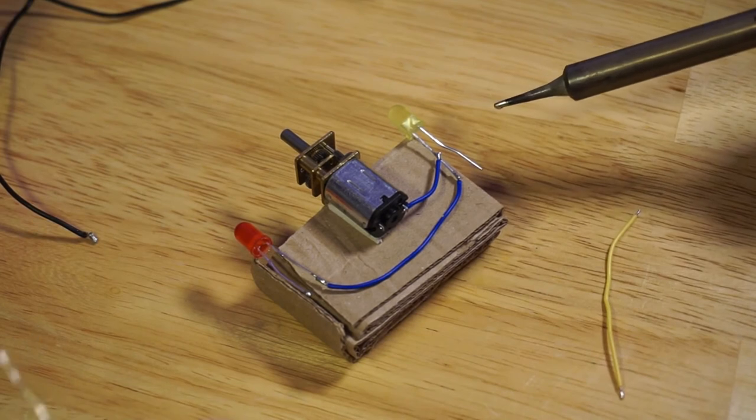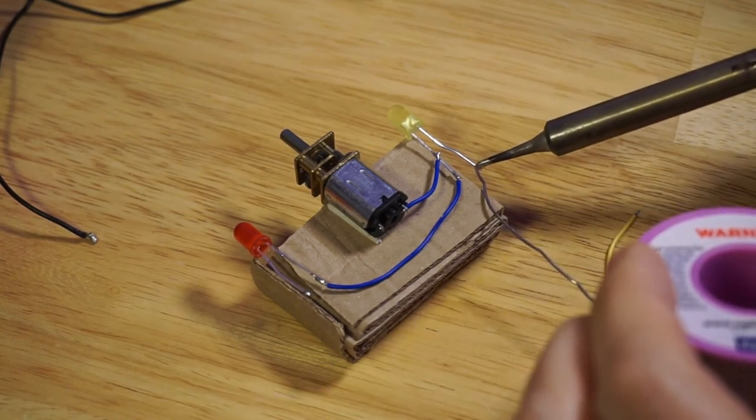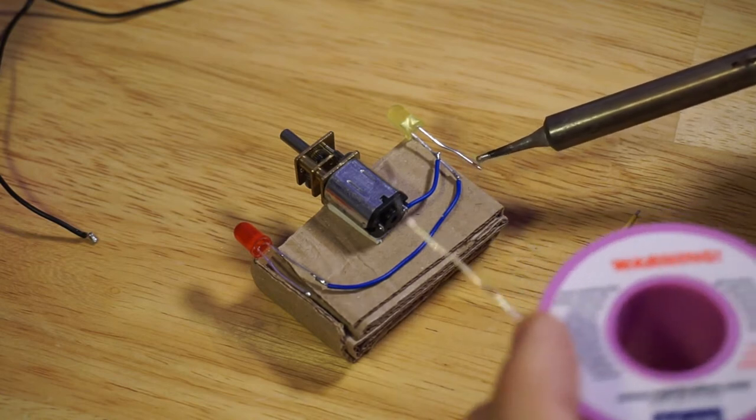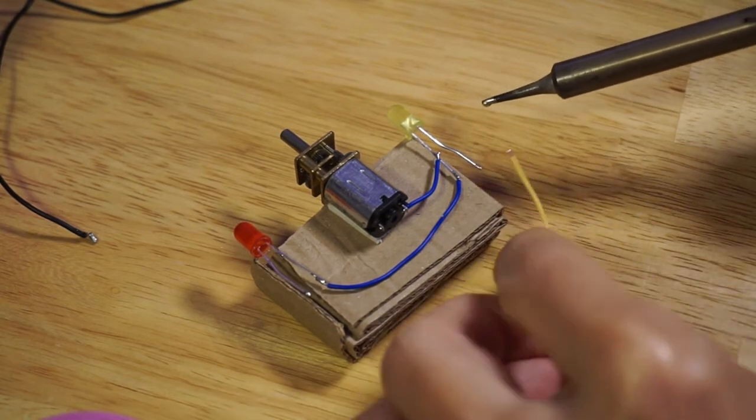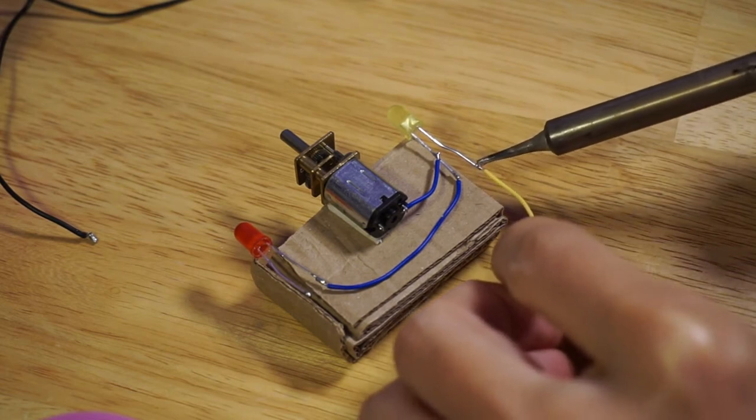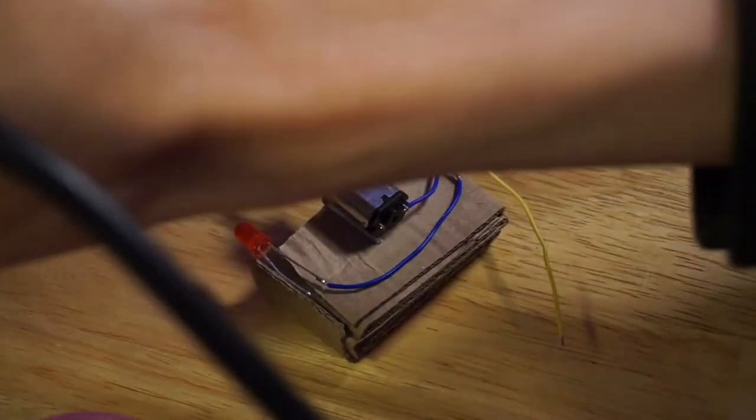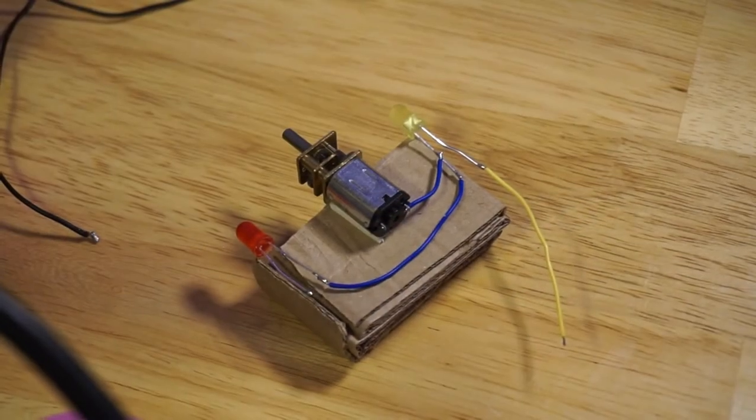Using another connecting wire, I soldered the anodes of the LEDs together as well. So that the LEDs end up being in parallel, but they are together in series with the DC motor. So in effect, the DC motor is going to be like a current limiting resistor.